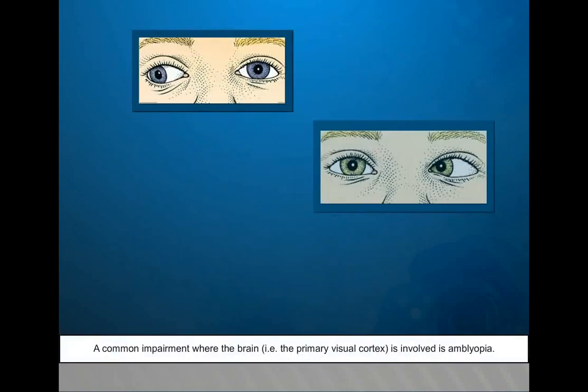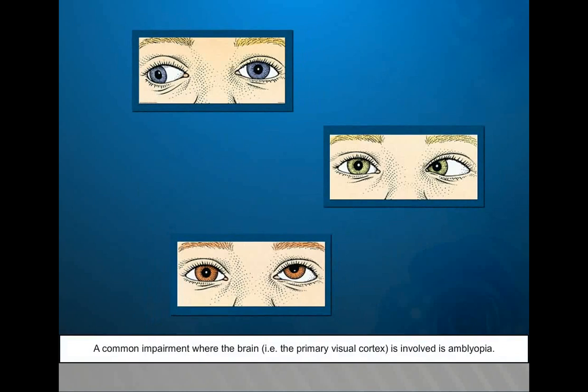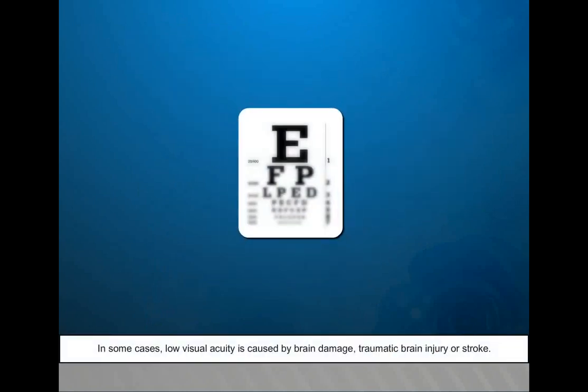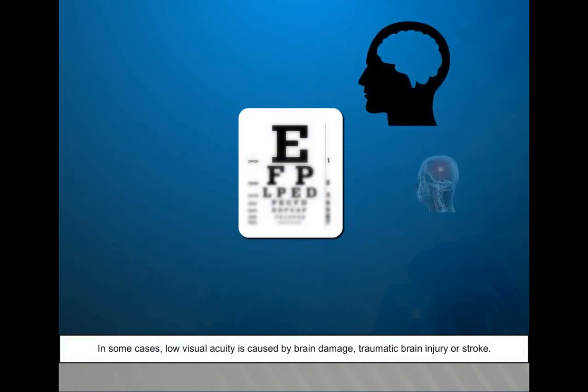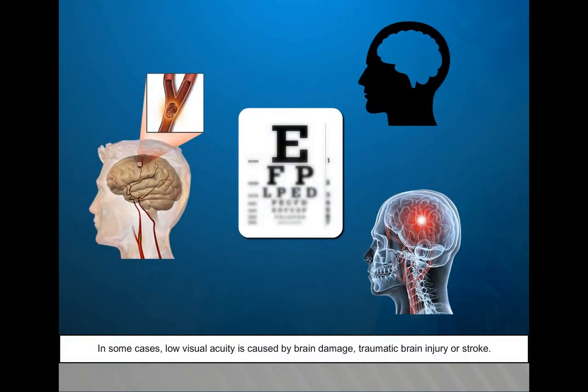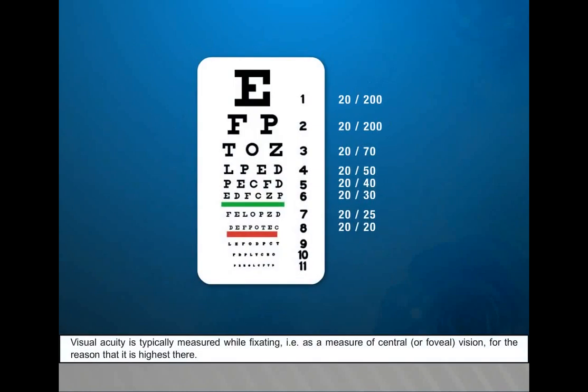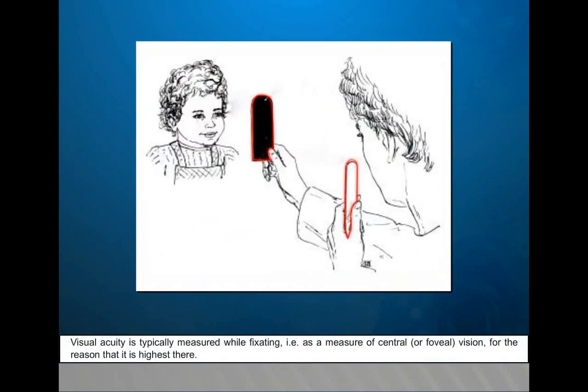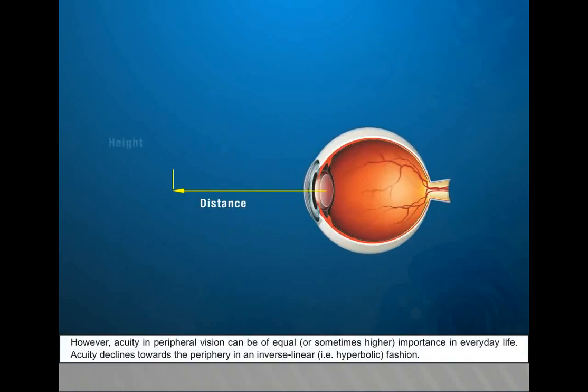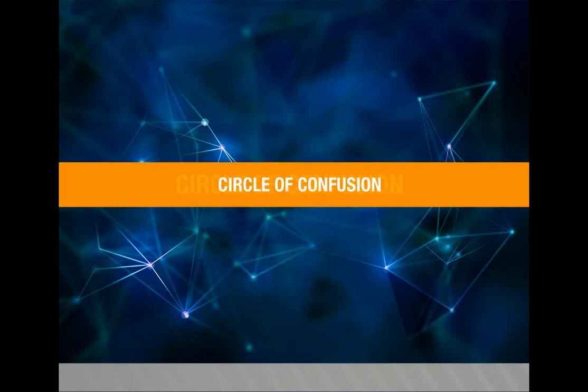Neural factors that limit acuity are located in the retina or the brain or the pathway leading there. A common impairment where the brain, i.e. primary visual cortex, is involved is amblyopia. In some cases, low visual acuity is caused by brain damage, traumatic brain injury, or stroke. When optical factors are corrected for, acuity can be considered as being a measure of neural well-functioning. Visual acuity is typically measured while fixating, i.e. as a measure of central or foveal vision, for the reason that it is highest there. However, acuity in peripheral vision can be of equal or sometimes higher importance in everyday life. Acuity declines towards the periphery in an inverse linear, i.e. hyperbolic, fashion.